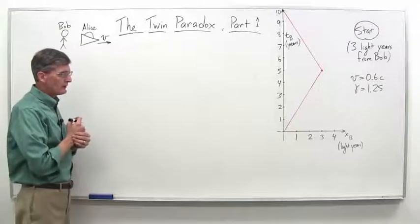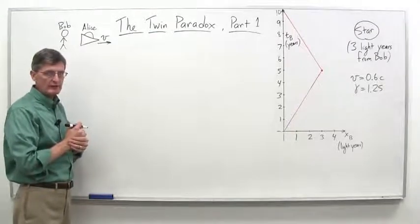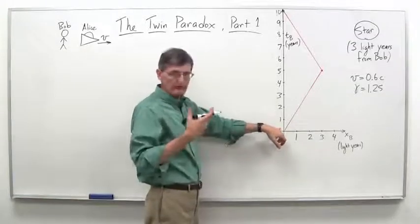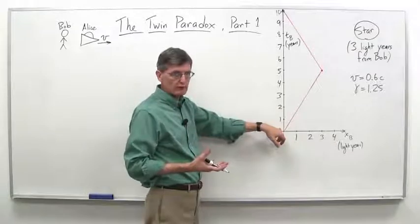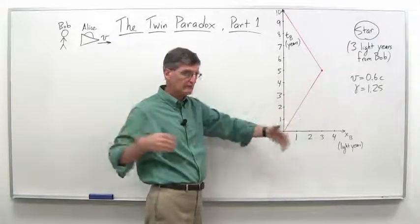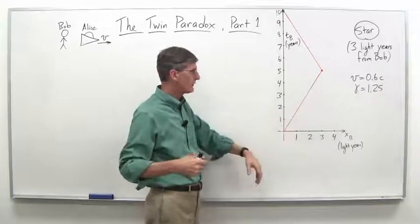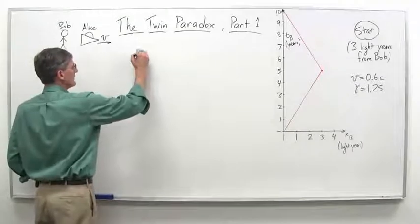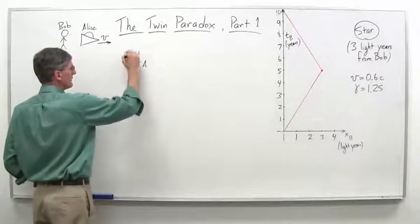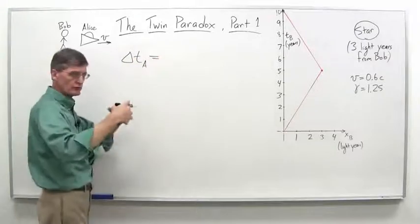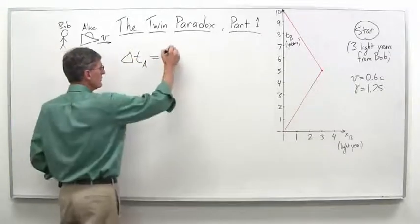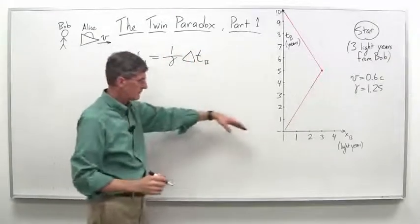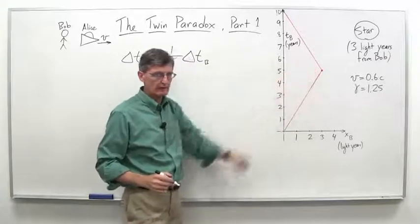And then let's think about what he sees Alice's clocks do. Well, Alice's clocks will be time dilated. They will be running slowly as he observes them according to his lattice of clocks. Remember, both Alice and Bob have their imaginary lattice of clocks all synchronized. And so we know that we'll just call it Alice's clocks, T sub A.